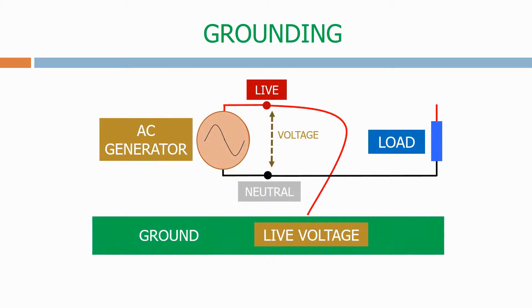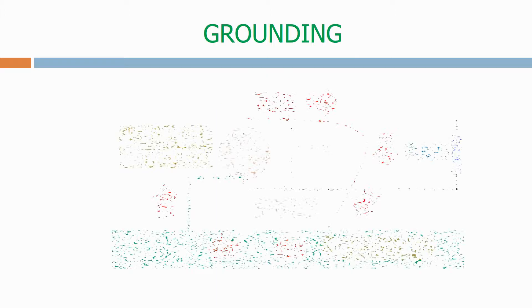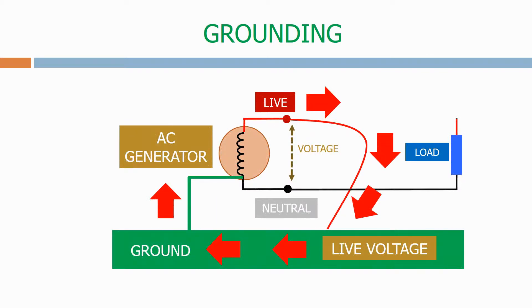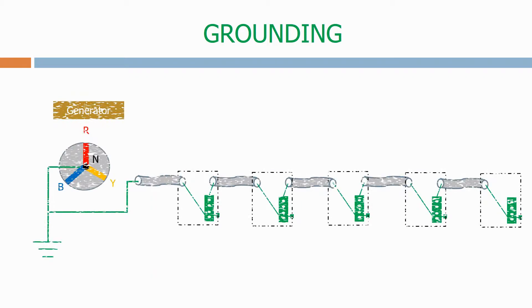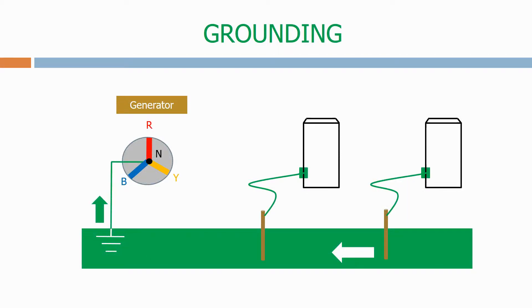In the next section, we look at grounding. We start by going back to first principles and looking at what happens when we have a fault in an ungrounded system. We then use this scenario to compare it to a grounded system and look at the differences between the two. We then go on to look at the different ways we install a ground system on site. In the first scenario, we use the cabling system to connect the ground network. Finally, we look at an alternative way to ground the network, which is to ground each individual panel.